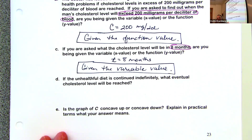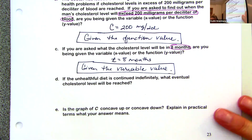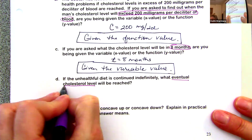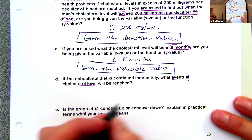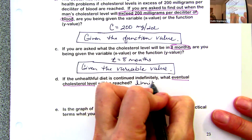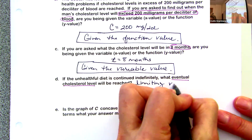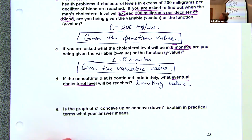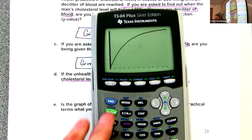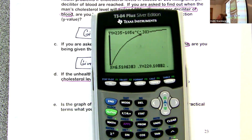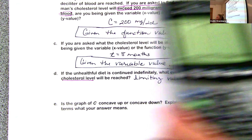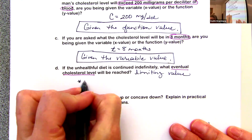If the unhealthy diet is continued indefinitely, what eventual cholesterol level will be reached? When they state 'eventual cholesterol level,' they're asking us to find the limiting value. There are two ways to find the limiting value. One is easier than the other. You could push trace and just keep going, but in my opinion the limiting value is easier to find on the table.